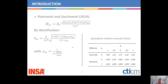We can determine the value of the equivalent uniform moment factor, which is shown in the table here. We can see an increase between the case of free warping — the second line — and fixed warping — the bottom line. The increase is between 10 to 20%.